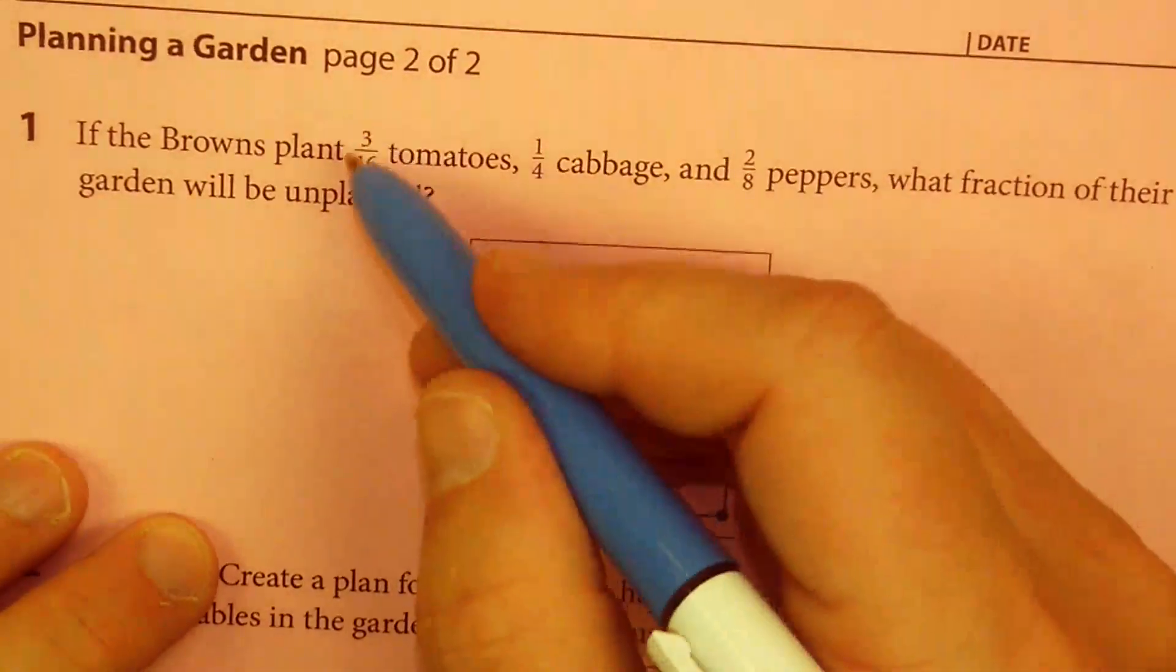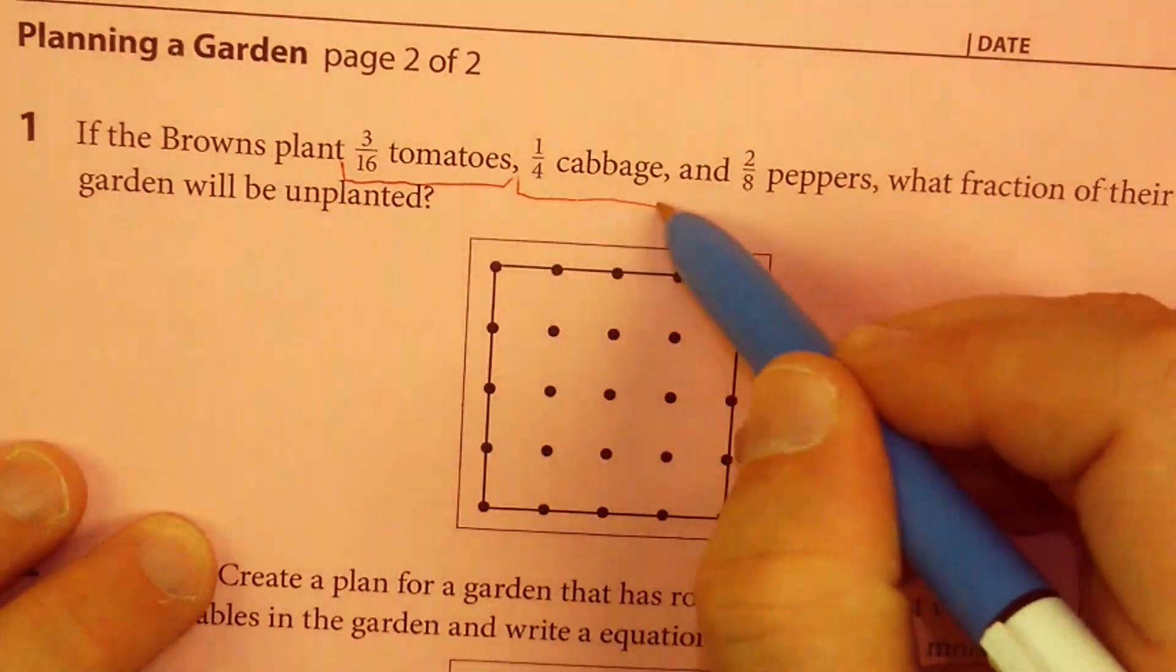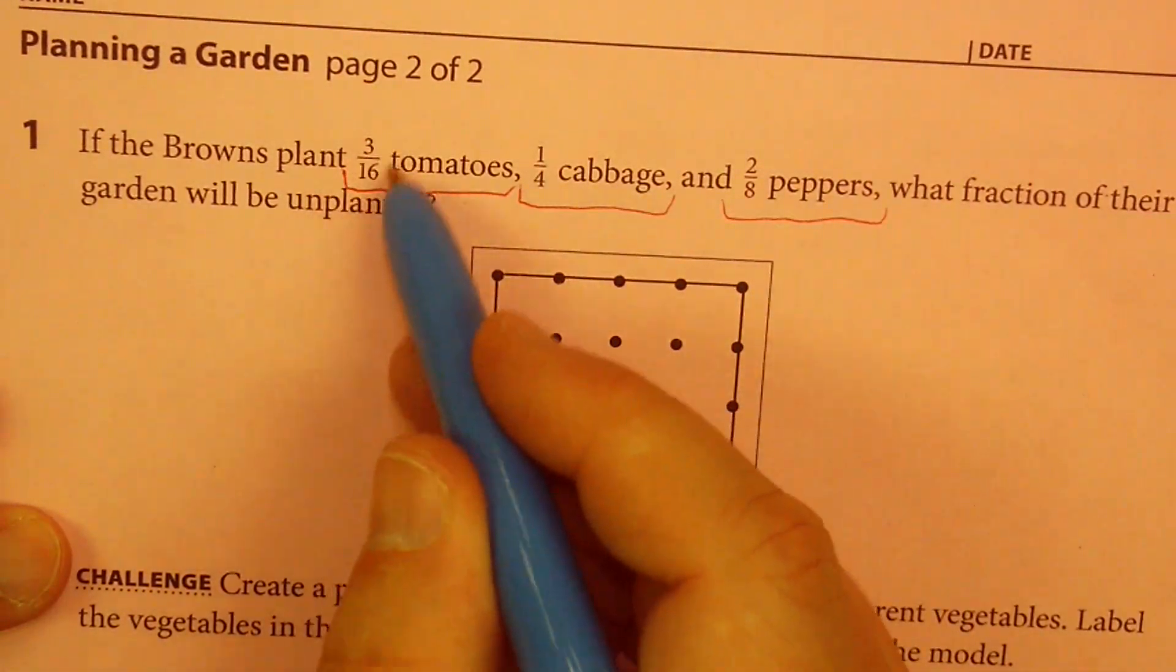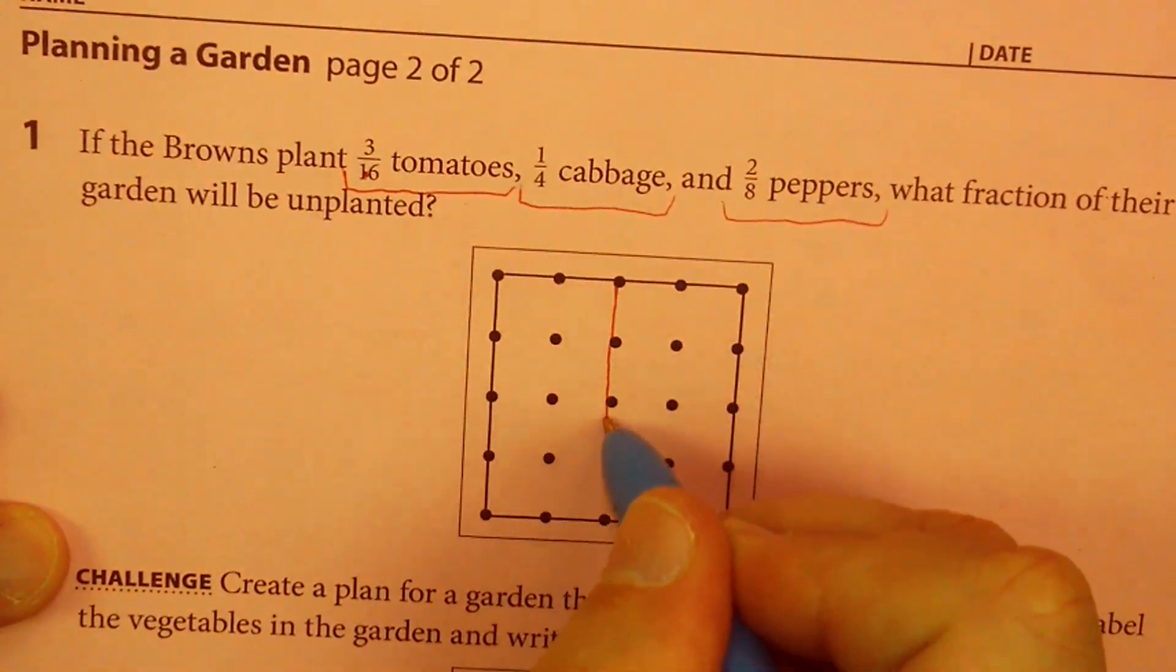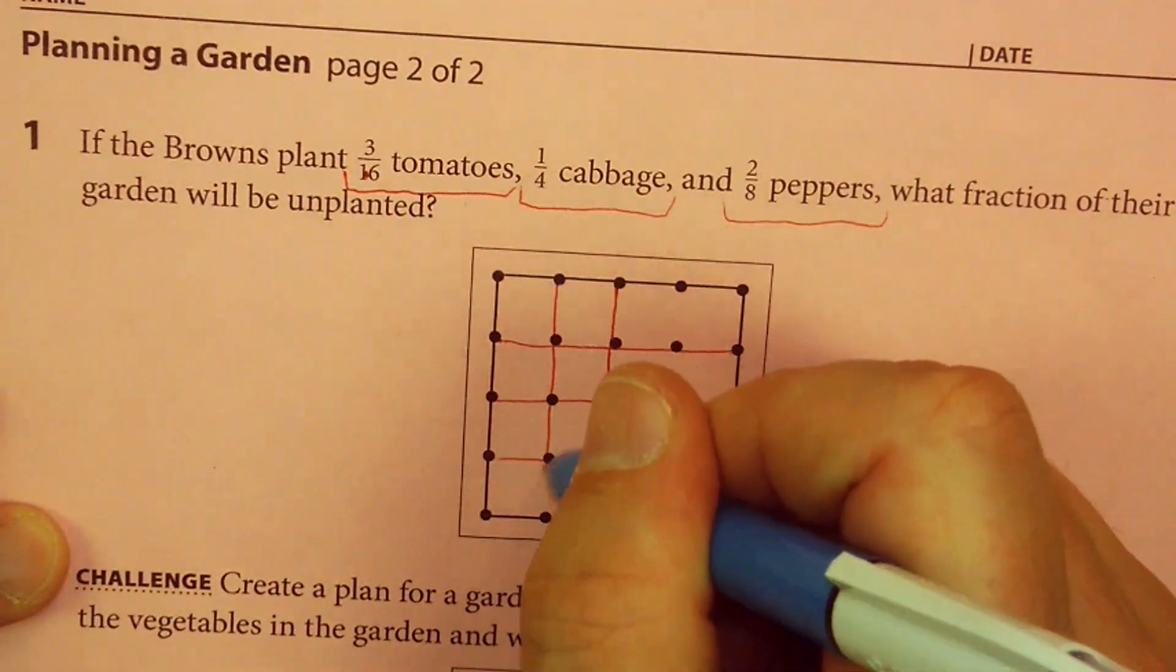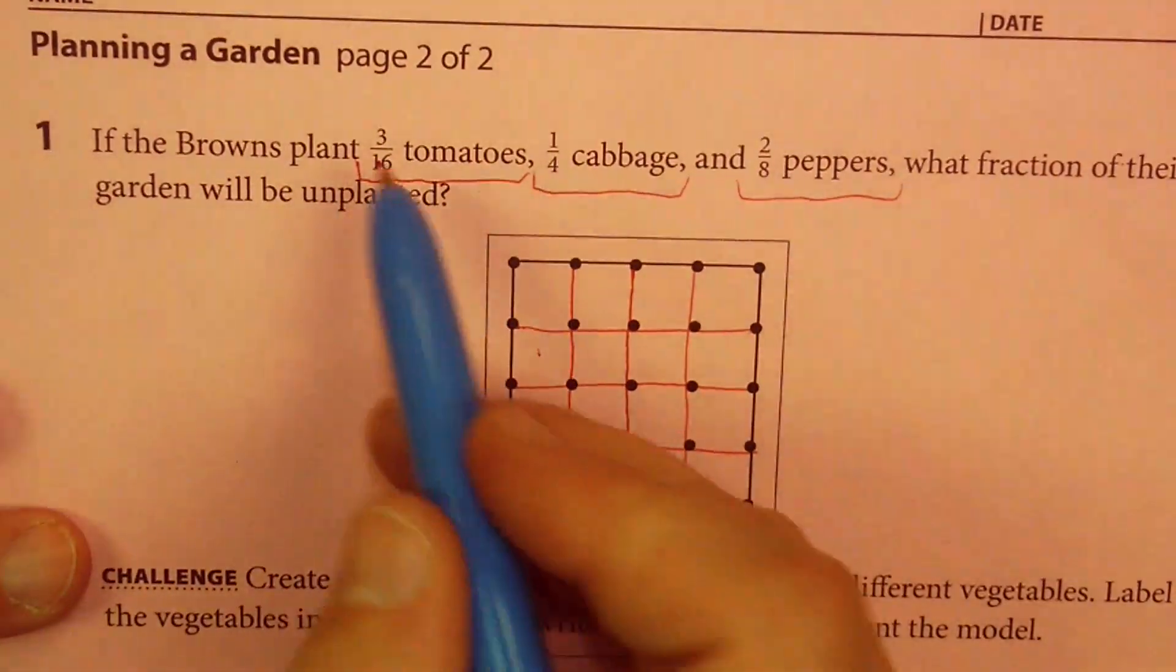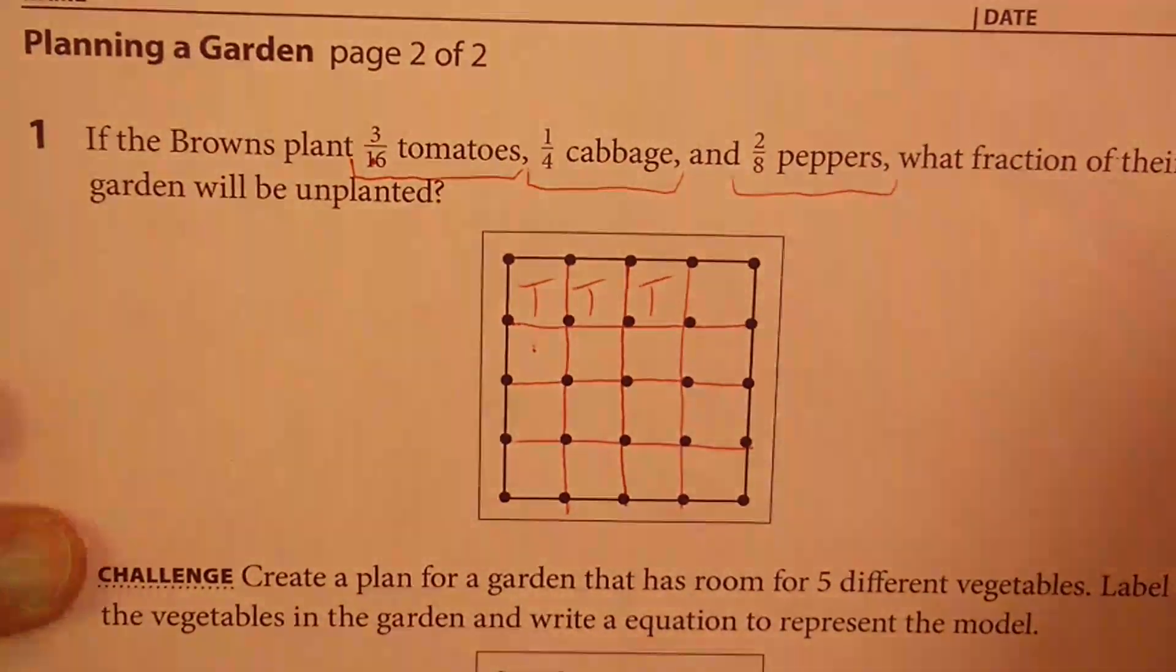If the Browns, they're doing three-sixteenths, a quarter cabbage, two-eighths peppers. Wow, that's a lot. So why don't we, let's see, it looks like the smallest thing we have is sixteenths. So let's put the whole thing into our smallest unit. So I'm going to draw a line connecting all the dots until I have sixteen squares. Three of them are tomatoes. Tomato, tomato, tomato.